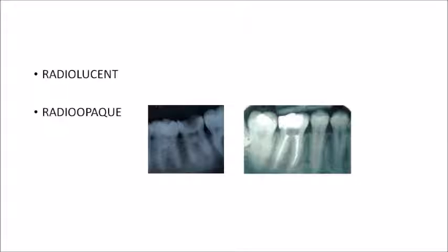From the diagram, we can see a root canal treated first molar. The restorative material — most of them are radiolucent in nature in the away condition.